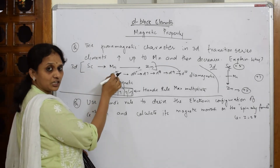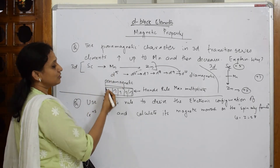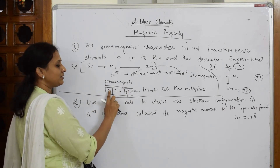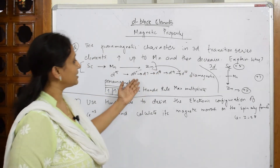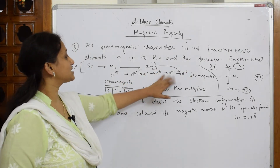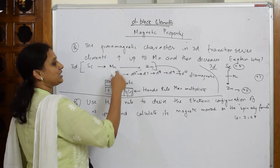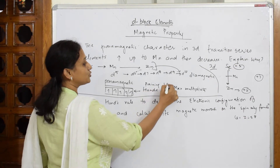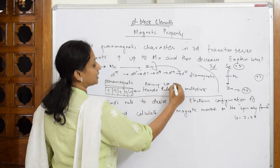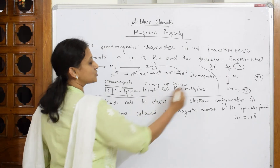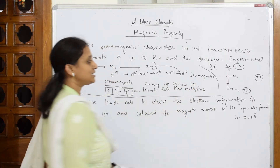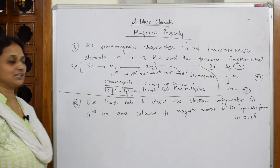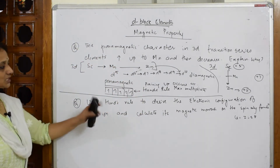According to the atomic number, electrons fill 4s first, then 3d one after the other, until reaching the half-filled d5 at manganese. After that, paramagnetic character decreases because pairing up of electrons occurs — according to Hund's rule of maximum multiplicity, pairing up starts after d5, and hence paramagnetic behavior becomes diamagnetic behavior.